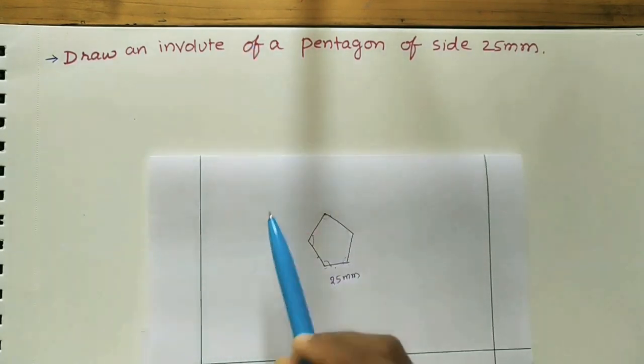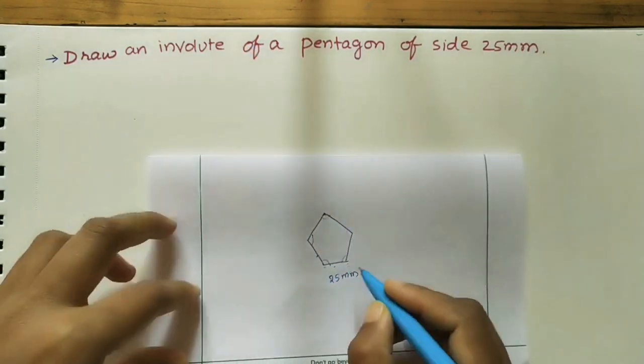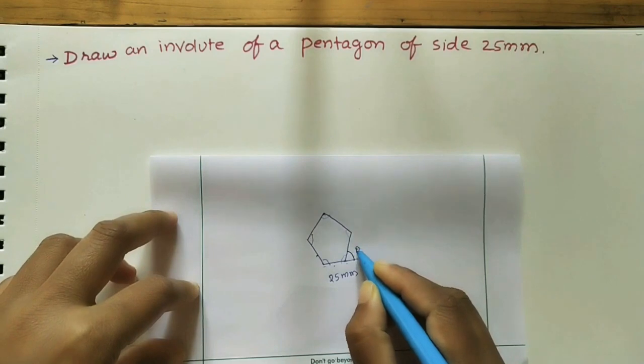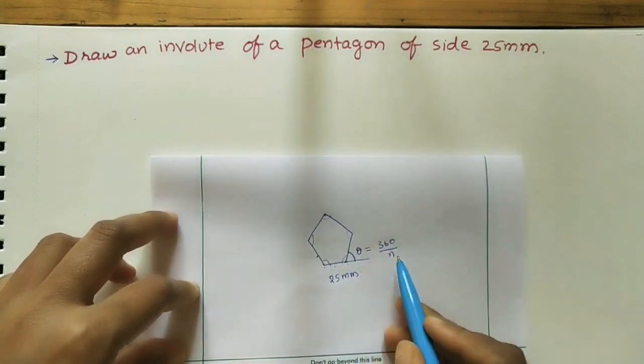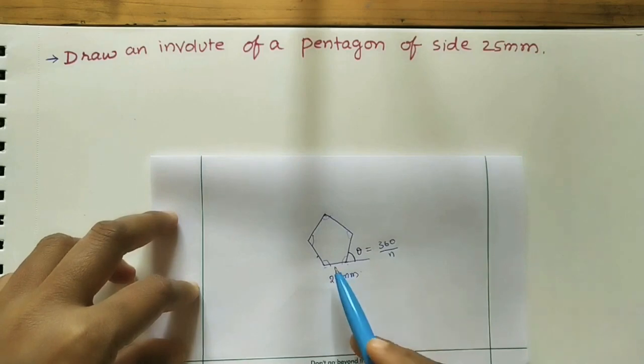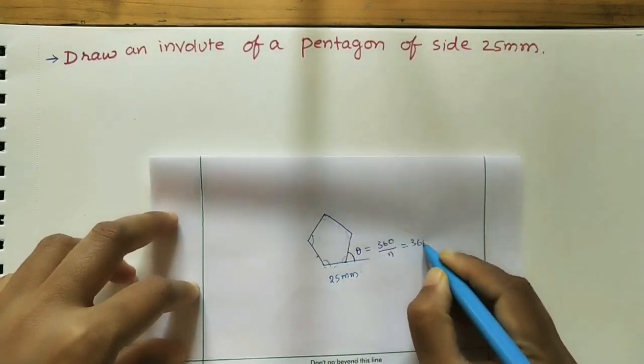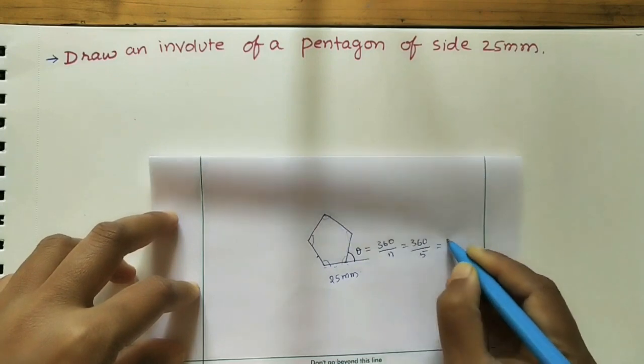For doing the involute, we need to do the pentagon. So we have one outer angle formula. Theta, I am taking outer angle, it is 360 by n, where n is number of sides of the polygon. Here we are taking pentagon. It has 5 sides, so n equals 5. 360 by 5, it is equal to 72 degrees.